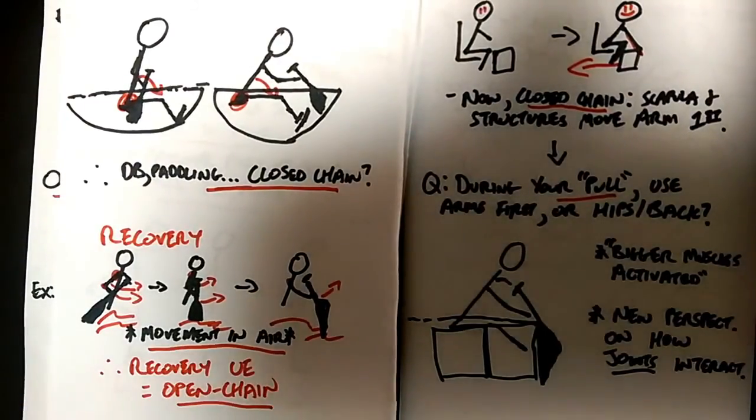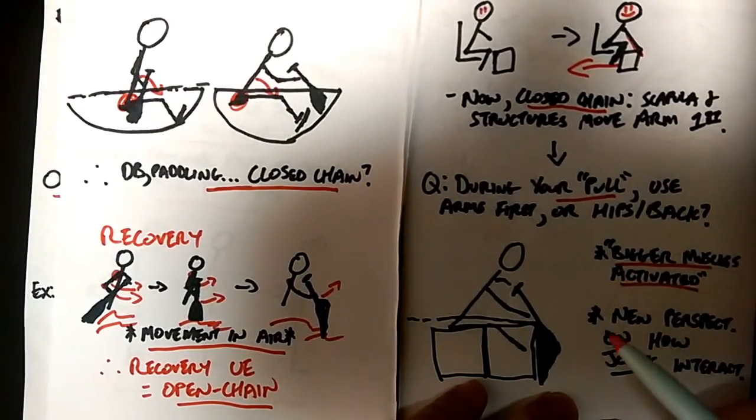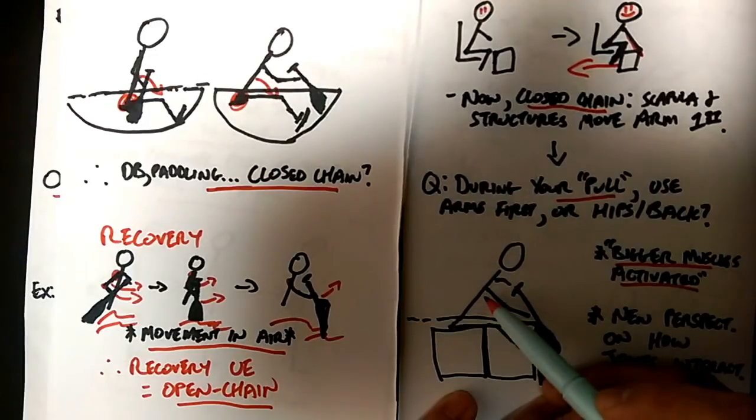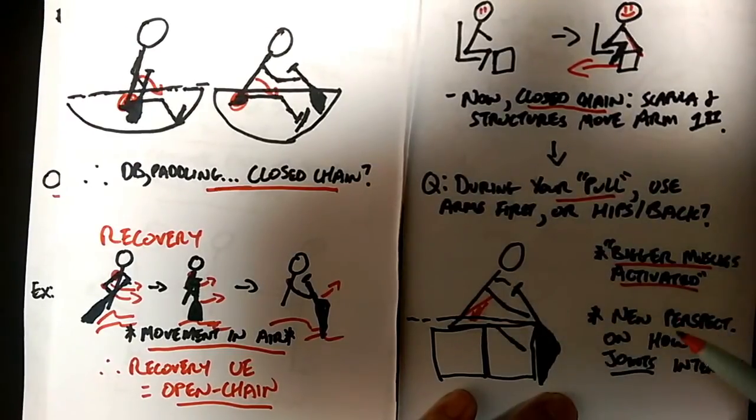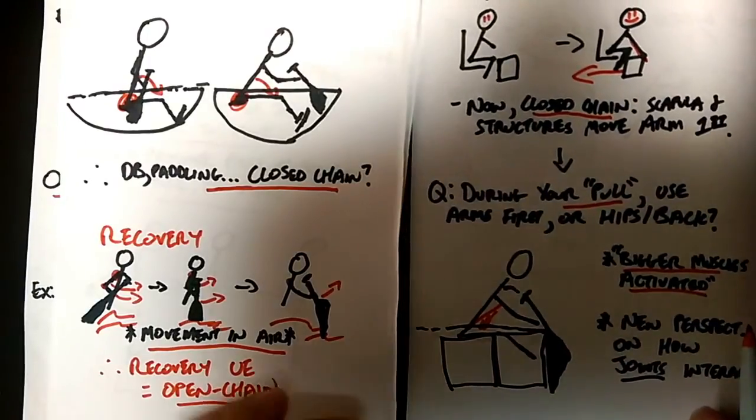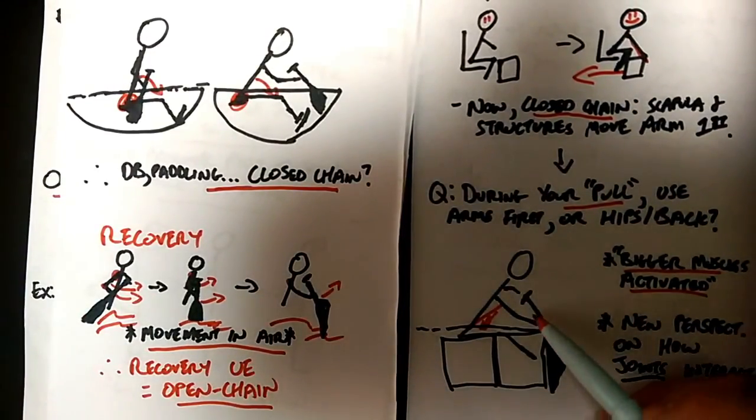So if you've been paddling for a while, right? I mean, most of your coaches have probably told you and most of you could kind of figure out that bigger muscles are going to be generally activated and you want to use your lats, you want to use your core if you can to really get the most power out of your stroke as possible.